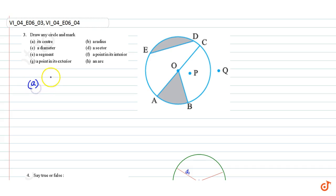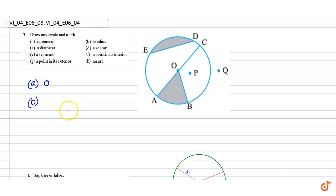Part A: the center is O. Part B: the radius. The radius of the circle can be OA, OB, or OC.